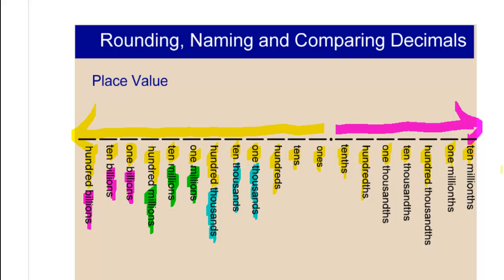And then the other pattern repeats as well, except instead of saying thousands, we say thousandths: one thousandths, ten thousandths, hundred thousandths, one millionth, ten millionths, hundred millionths. So that's all there is for place value.